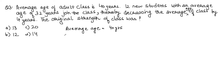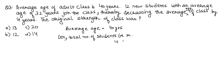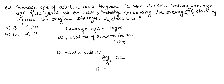Let the total number of students be x. So total age = 40x. Twelve new students are added whose average age is 32, so their total age = 32 × 12 = 384.